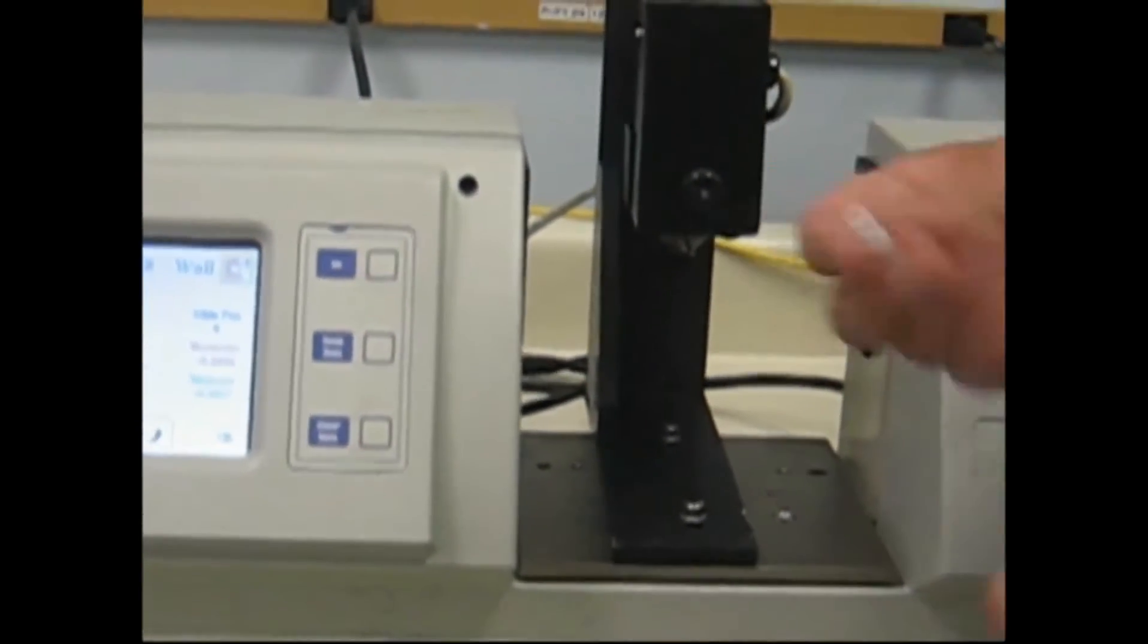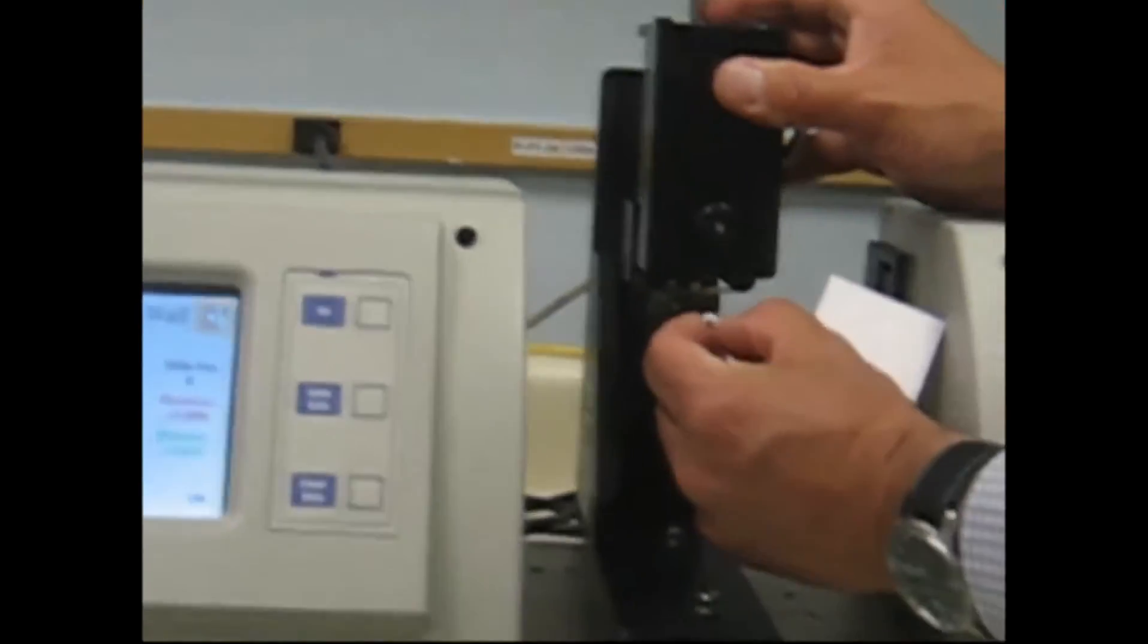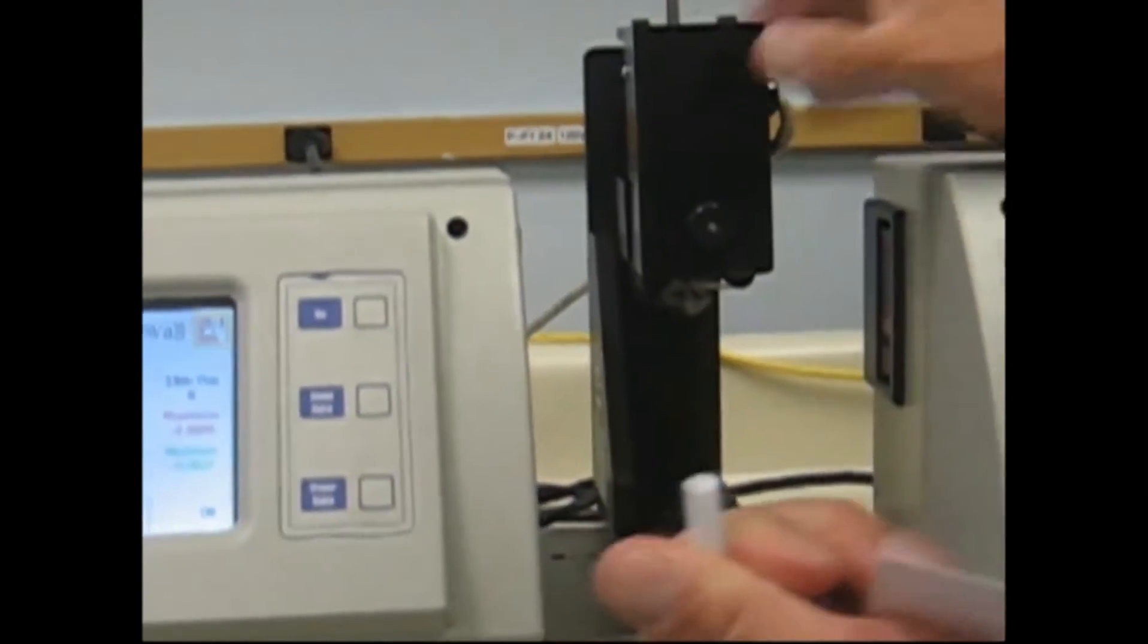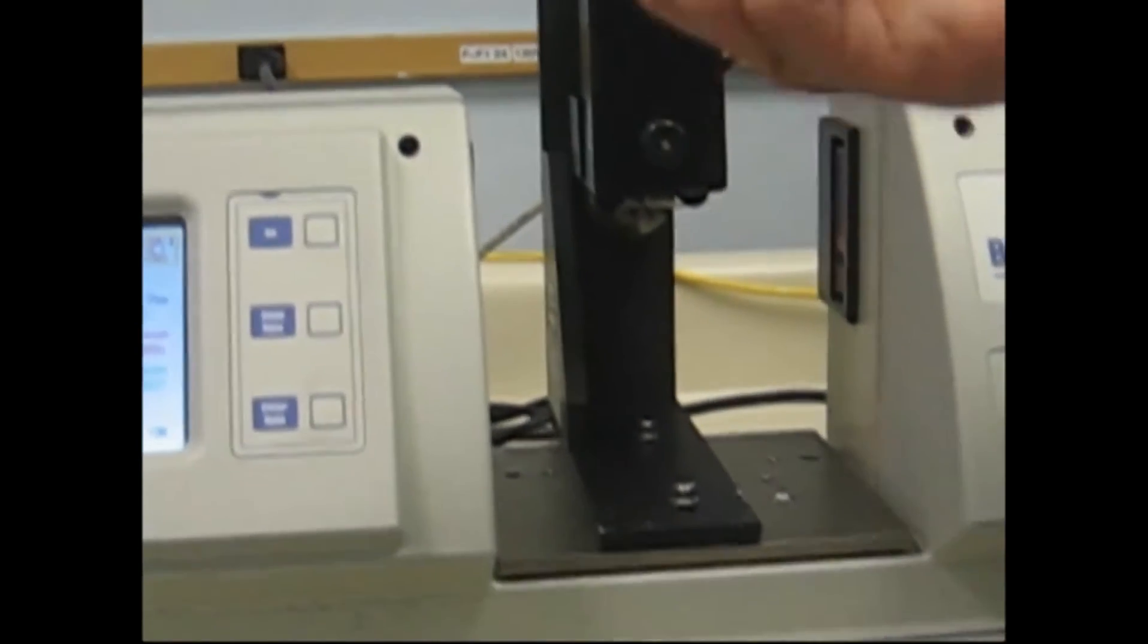The mandrel doesn't want to be a tight fit in the tubing ID. It wants to be a sliding fit, but more than 50% of the ID that we're measuring.